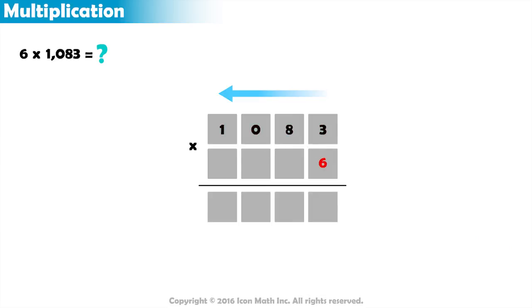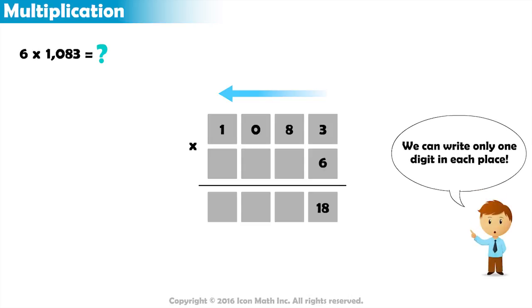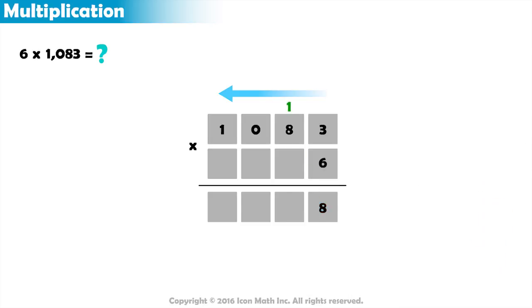6 multiplied by 3 equals 18. Remember, we can write only one digit in each place, so we write 8 in the ones place and carry the 1 to the next place.